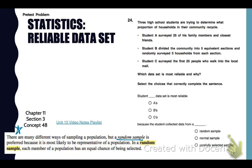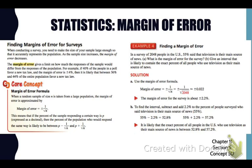Go to 24 in your pretest. We've got three high school students trying to determine what portion of households in their community recycle. Student A surveyed 25 of his family members and closest friends. That's pretty convenient, so that is not random. Random is going to be the best. Student B divided the community into five equivalent sections and then randomly selected five. So that's a stratified survey and that is random. And then C surveyed the first 25 people. So that is also convenient and not random. So student B has the most reliable data set or the most chances for that because that student collected data from a random sample. Again, a random sample will be the one that will most likely give you the most accurate results.